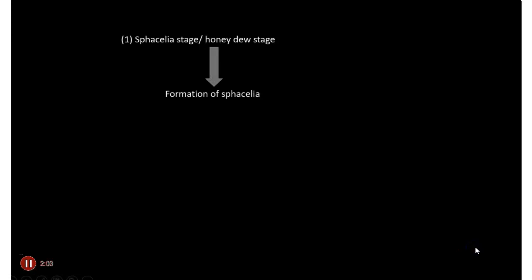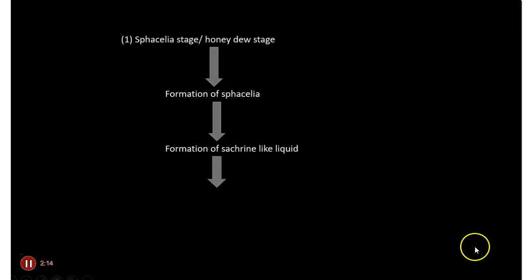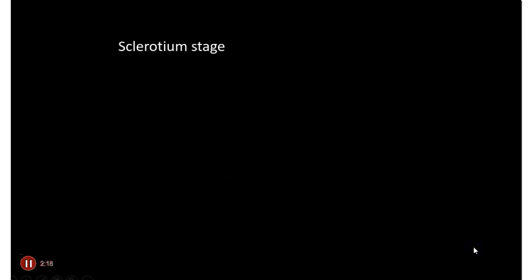Stage one is the Facelia stage. Formation of facelia leads to the formation of a saccharine-like liquid called honeydew. Stage two is the Sclerotium stage, which involves the formation of sclerotium.